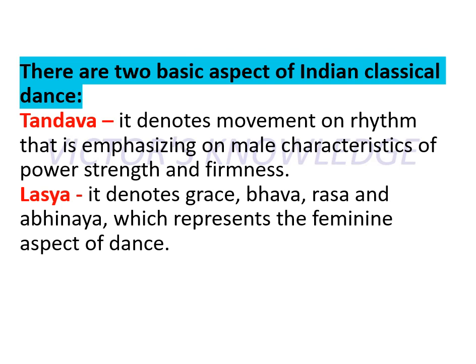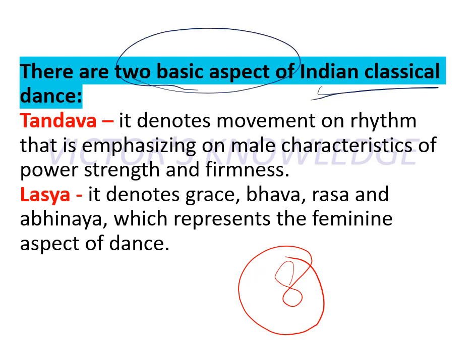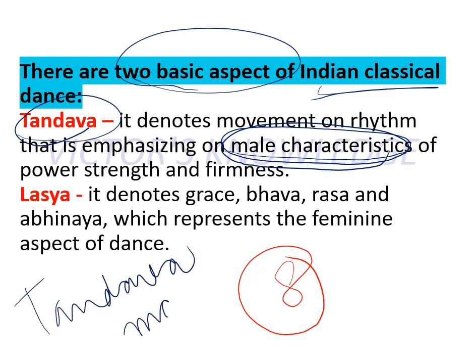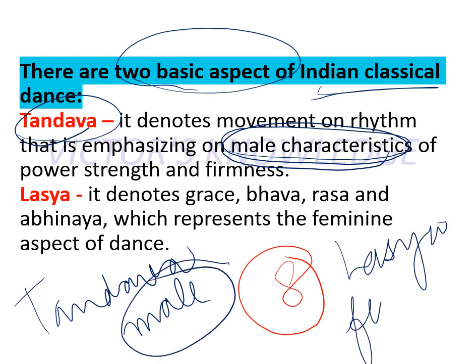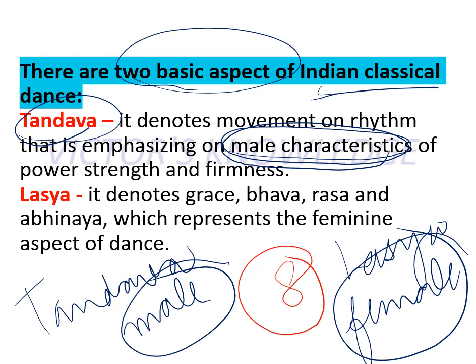Next: all Indian classical dances are based on two common elements — Tandav and Laasya. In the exam, you may be asked the meaning of Tandav, or what are the two basic aspects of Indian classical dance. Tandav is when you show power, strength, and the masculine character in your performance — bold, powerful dancing. Laasya is when you display the feminine character gracefully, with emotions and elegance. So in any Indian classical dance, you will see either Tandav when a male character performs, or Laasya.